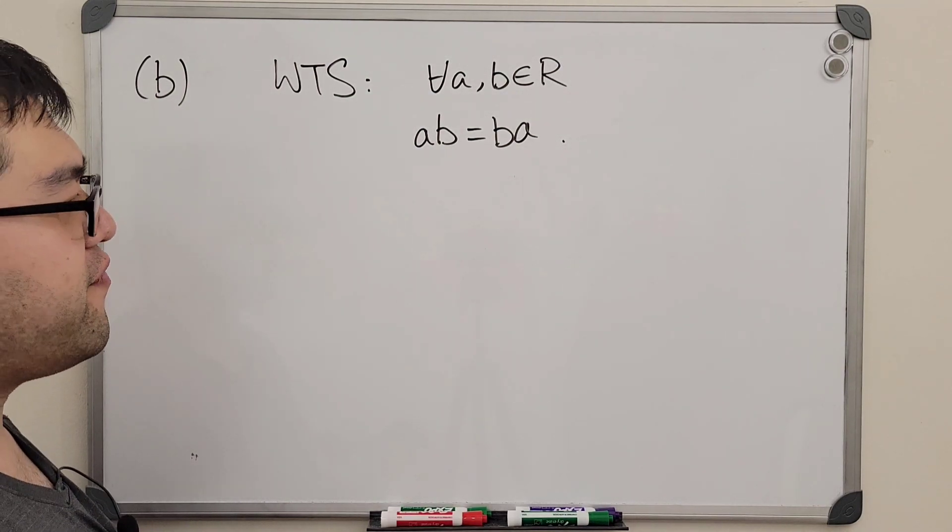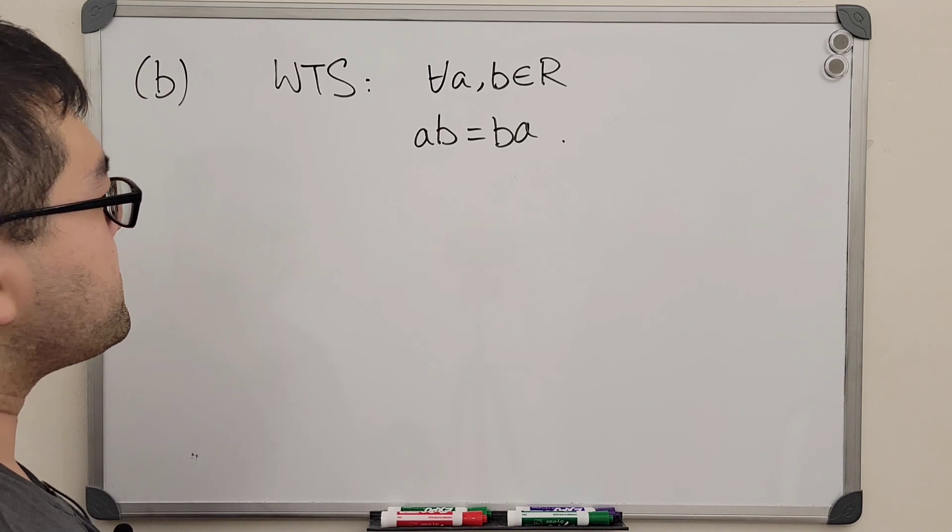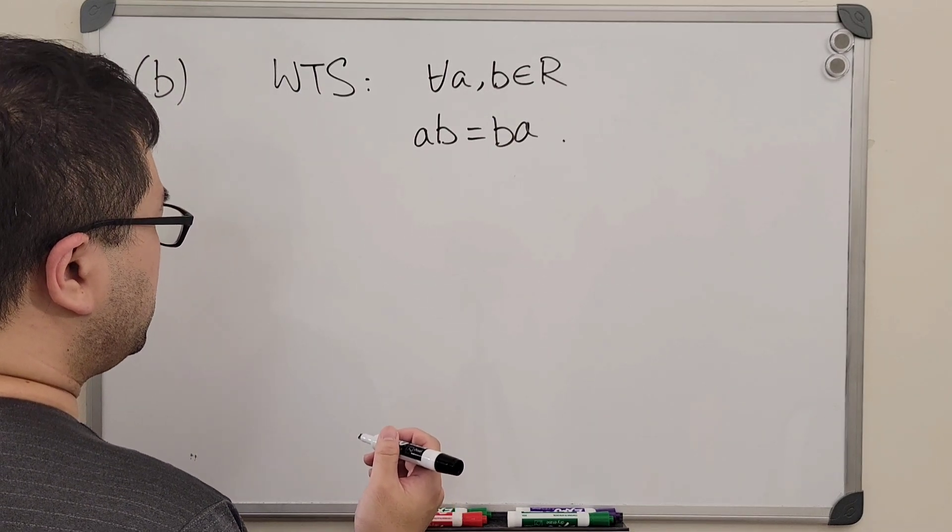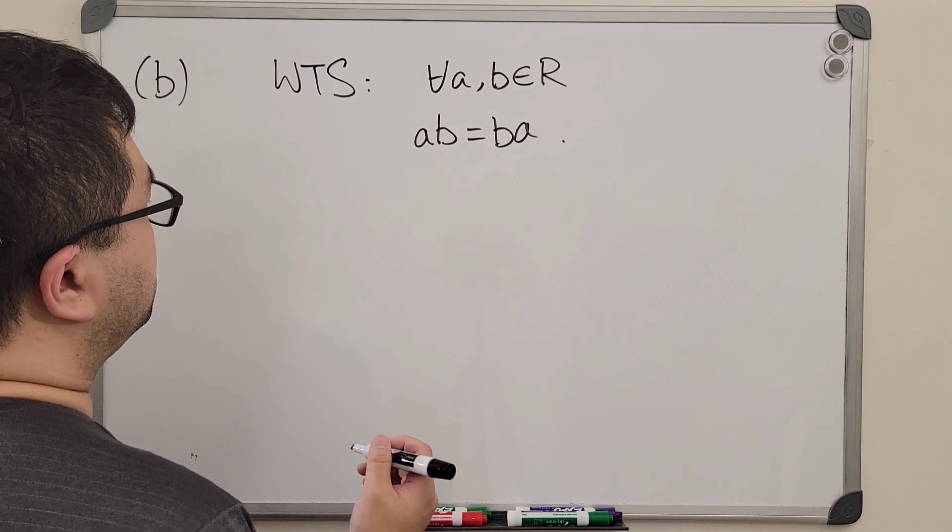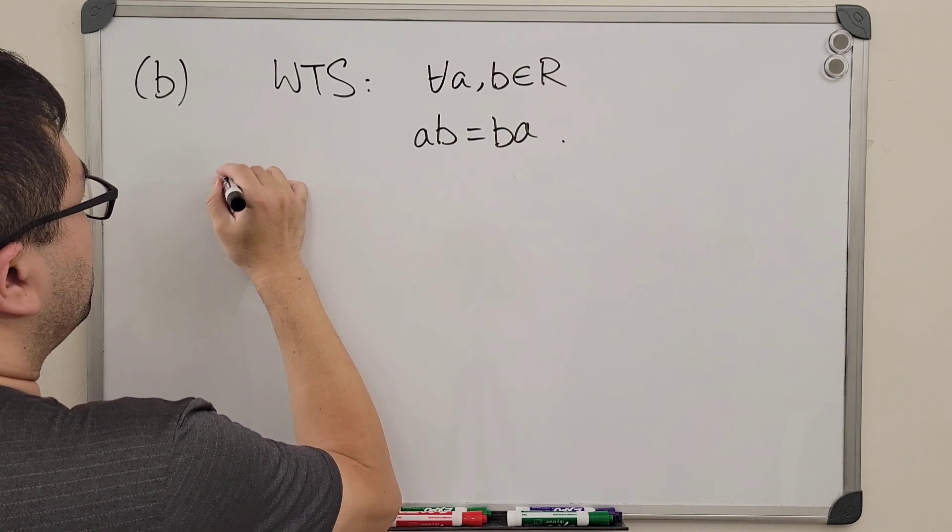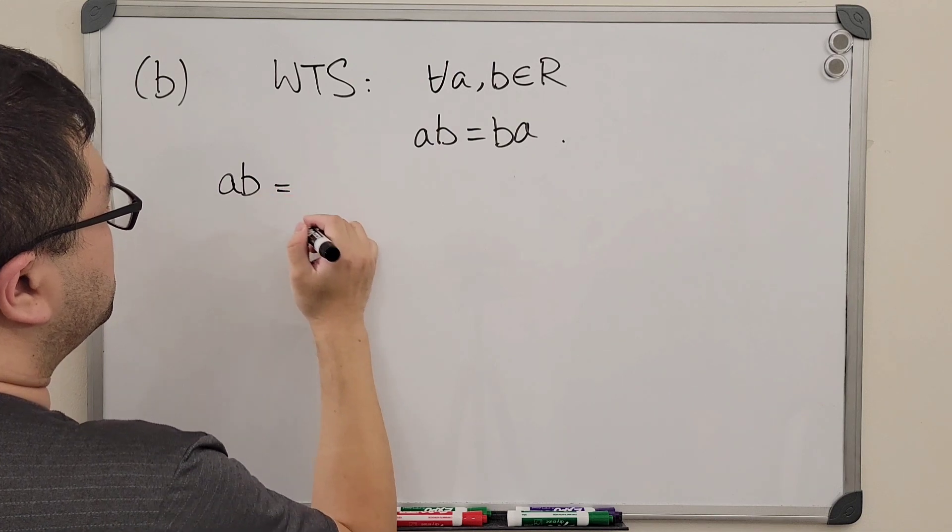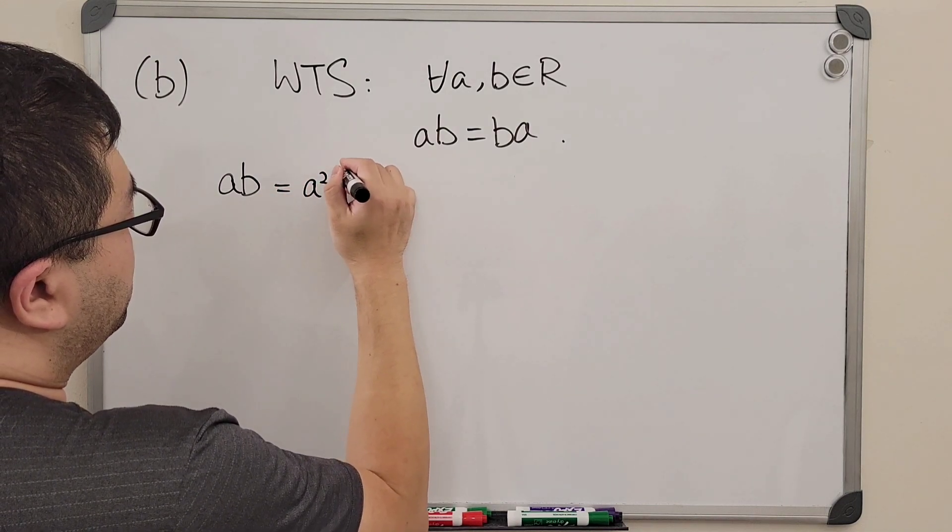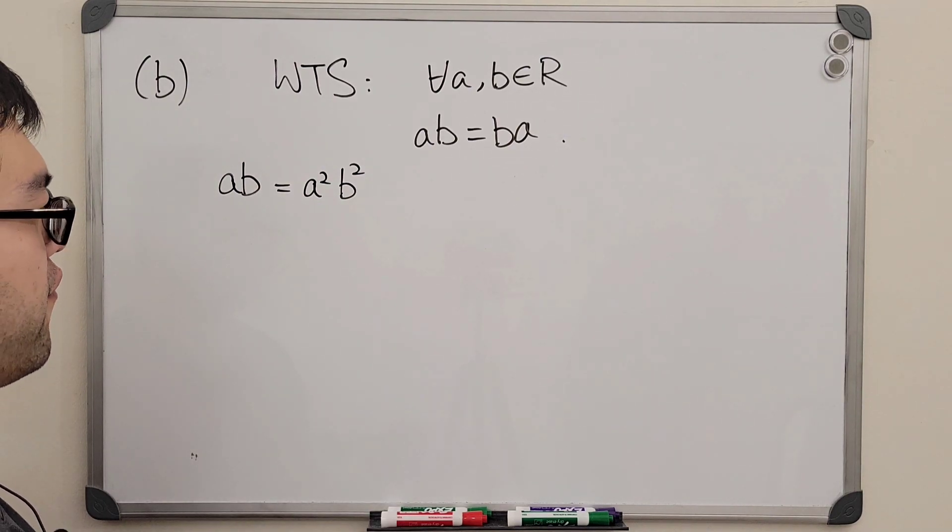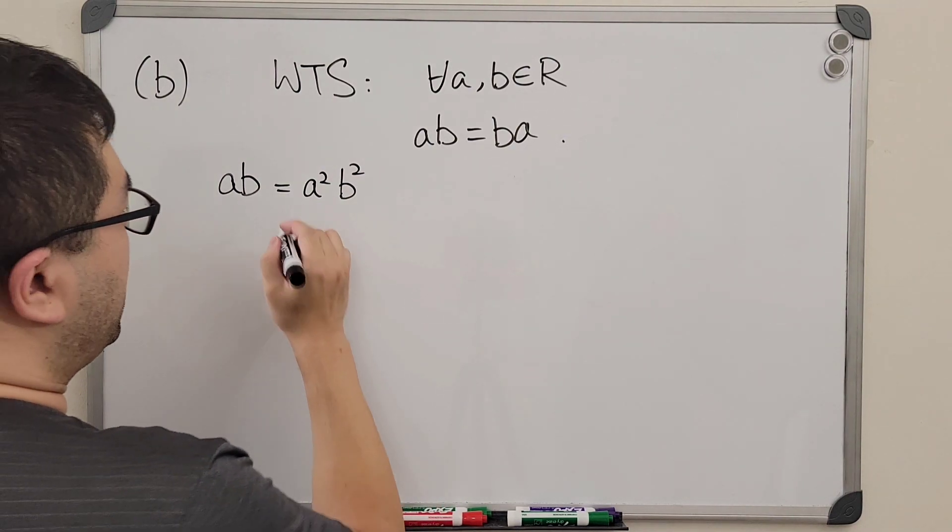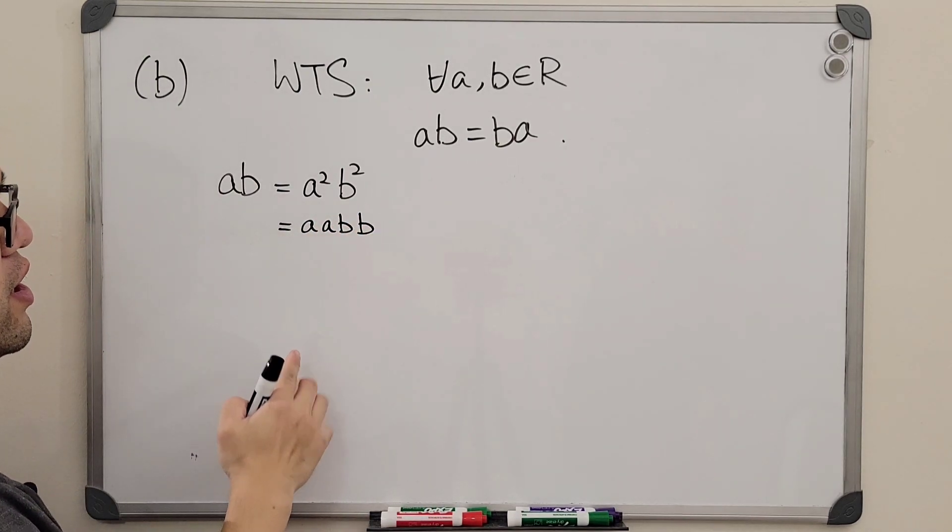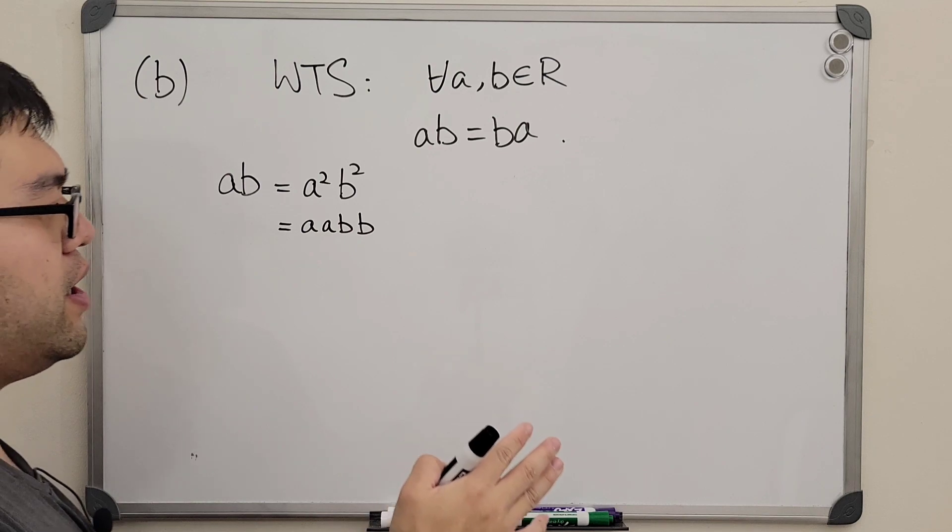Well, we can actually try to do it the following way. We're going to prove it by setting that ab is equal to a squared b squared, because again ab means a times b itself. Then that is going to give us aabb here. Of course, this doesn't really help us much for now.